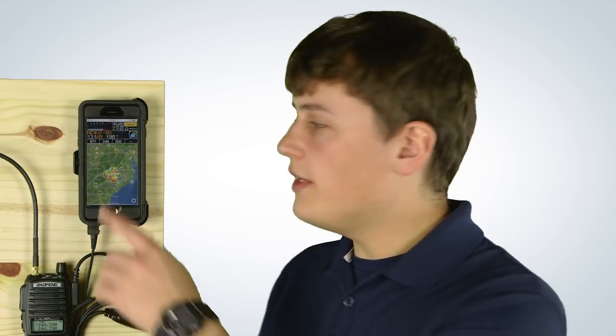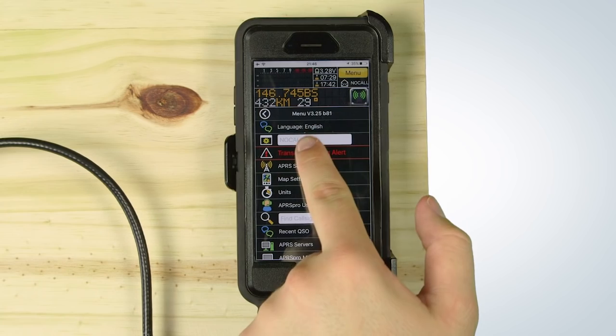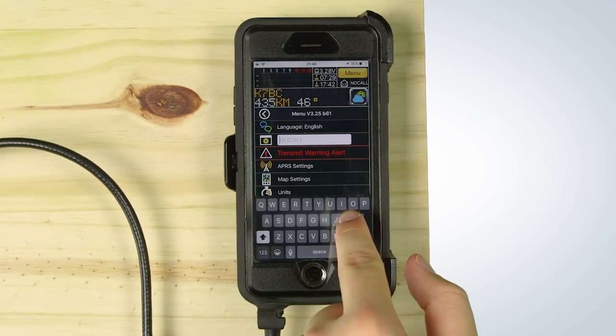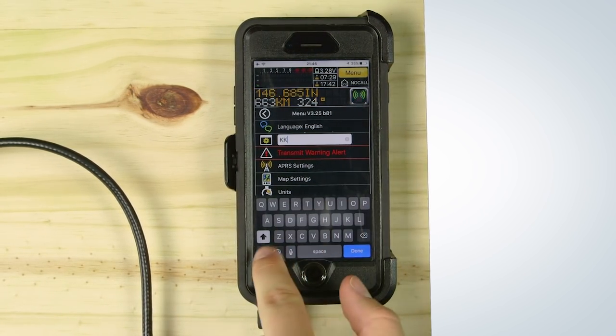Once you have purchased this feature and enable transmit via audio out, enter your callsign and you can begin transmitting your location via RF.